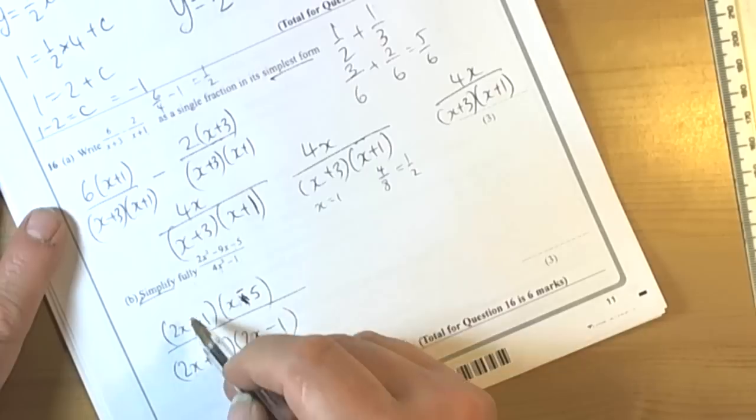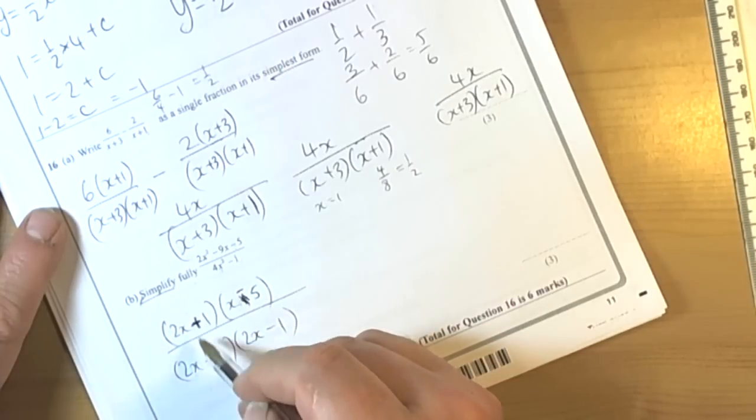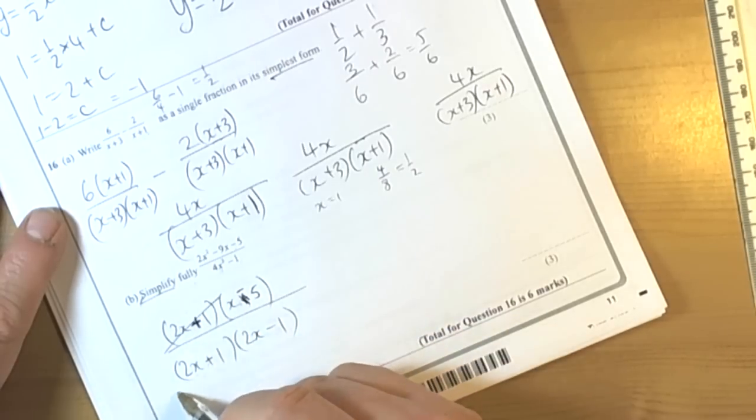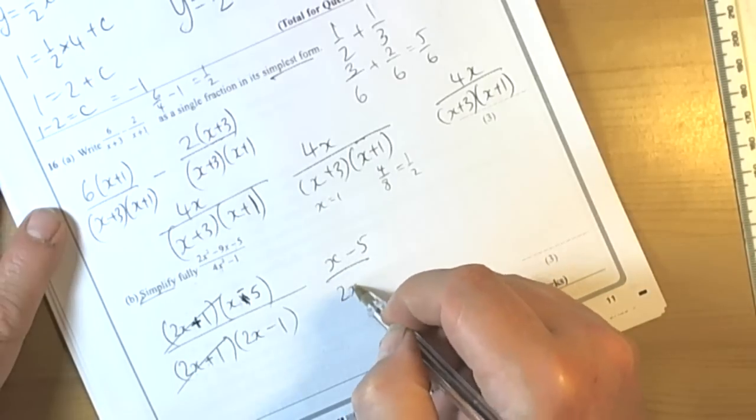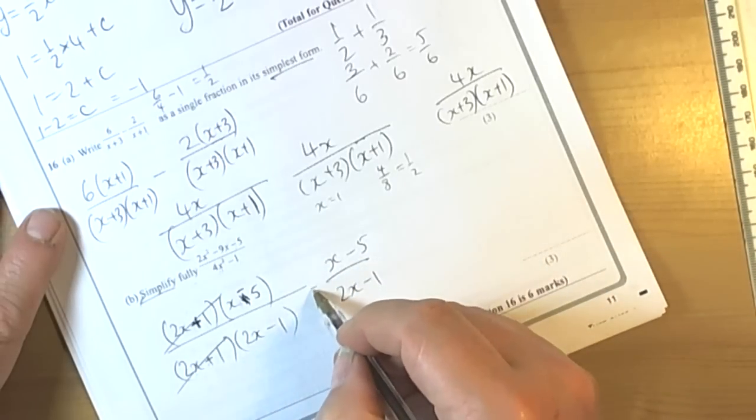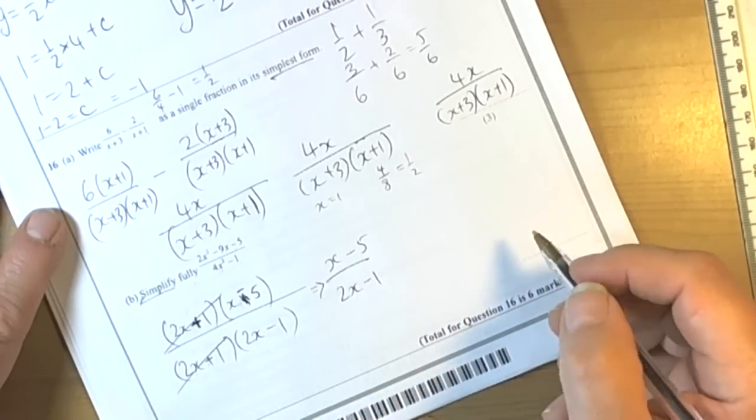I have got what I wanted to happen. I've got two brackets on the top and bottom here which are the same, so they cancel each other through to make 1. So my final answer is x minus 5 over 2x minus 1. Again, don't need the brackets now because that is the final answer.